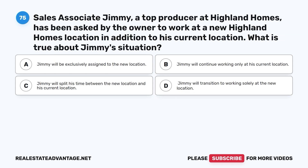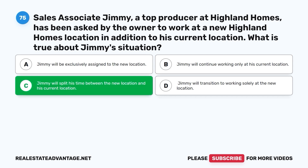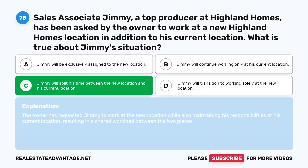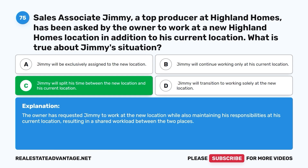Question 75. Sales associate Jimmy, a top producer at Highland Homes, has been asked by the owner to work at a new Highland Homes location in addition to his current location. What is true about Jimmy's situation? A. Jimmy will be exclusively assigned to the new location. B. Jimmy will continue working only at his current location. C. Jimmy will split his time between the new location and his current location. D. Jimmy will transition to working solely at the new location. The correct answer is C. The owner has requested Jimmy to work at the new location while also maintaining his responsibilities at his current location, resulting in a shared workload between the two places.